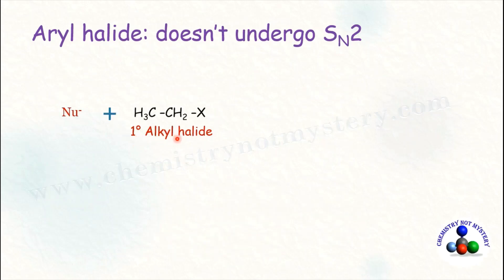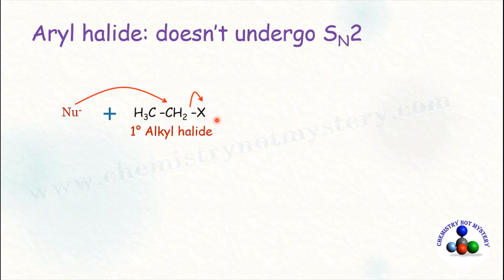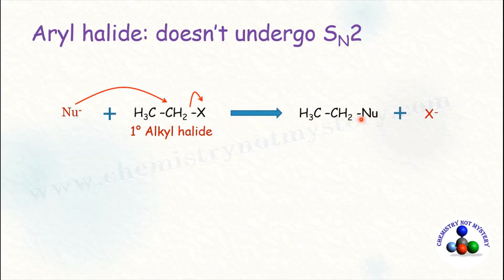Here is a primary alkyl halide. When a nucleophile approaches a primary alkyl halide, it attacks the alpha carbon and expels the halogen in the form of a halide ion, getting attached to the carbon in place of halogen. That's how it undergoes nucleophilic substitution reaction by SN2 mechanism.